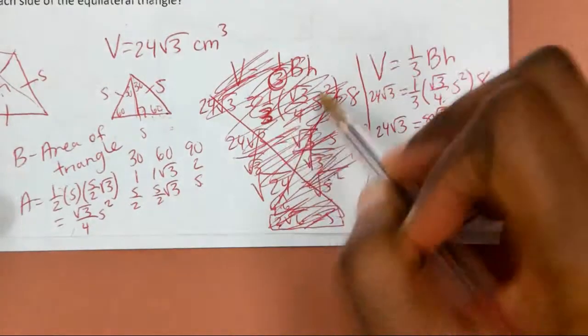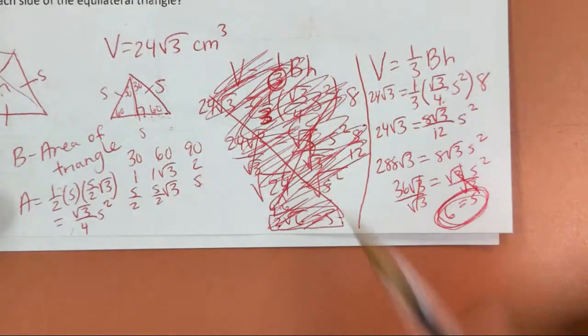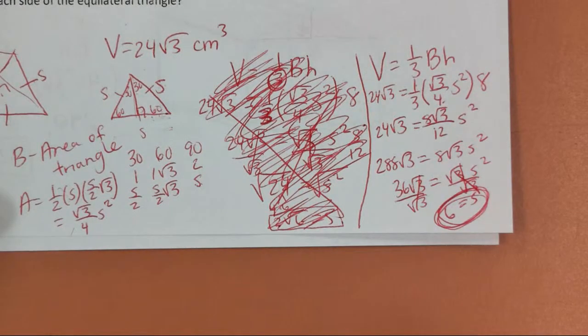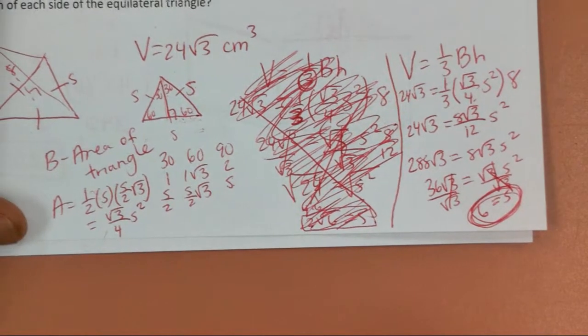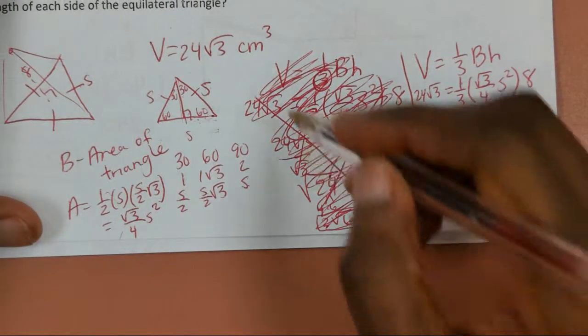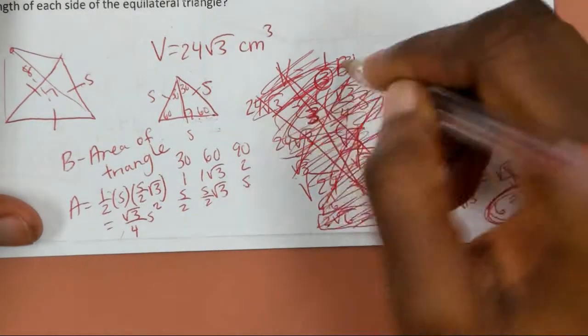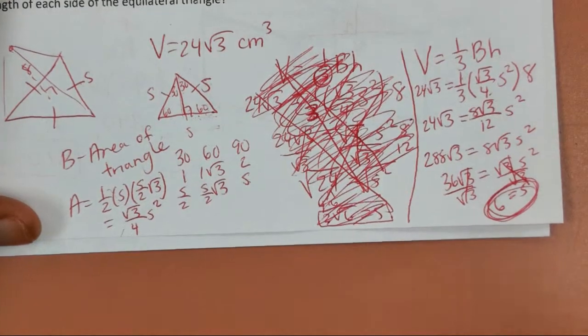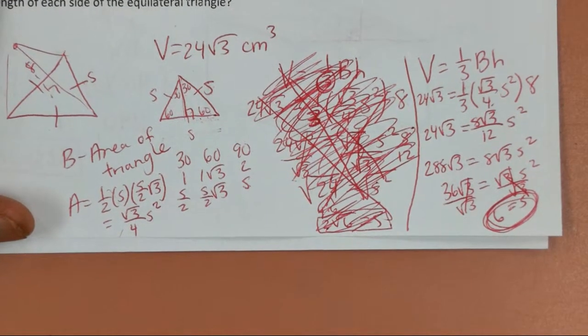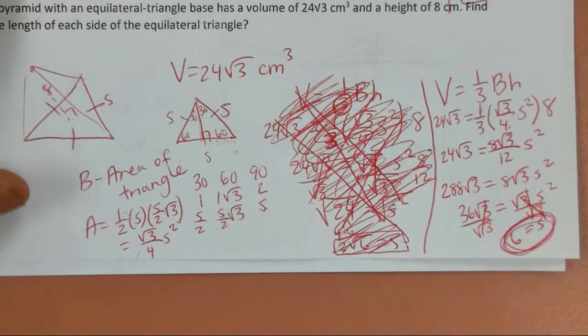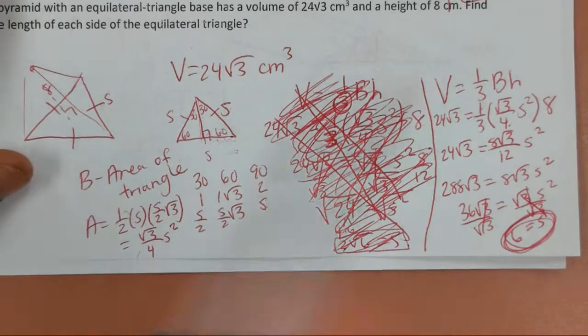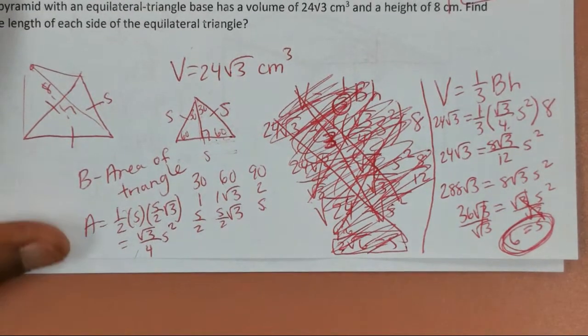This is what you should do on your test if you make a mistake — cross out or fully erase what was wrong so it's clear which work is correct.